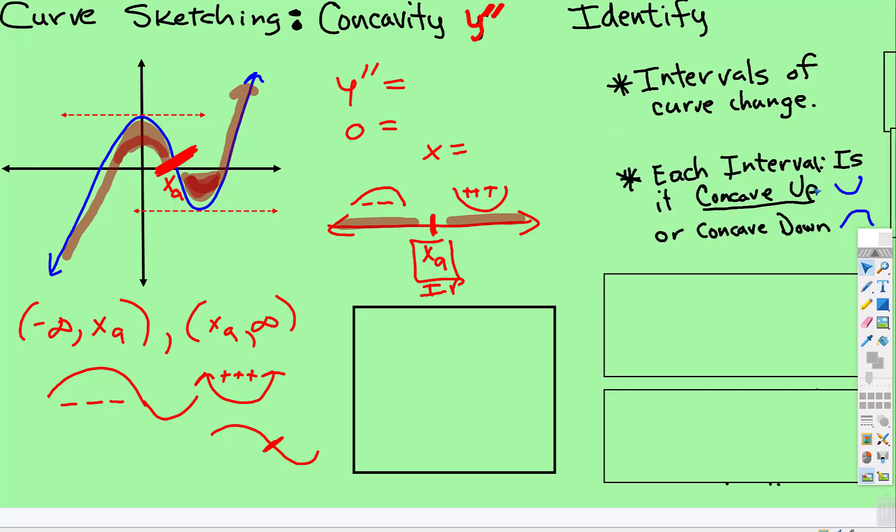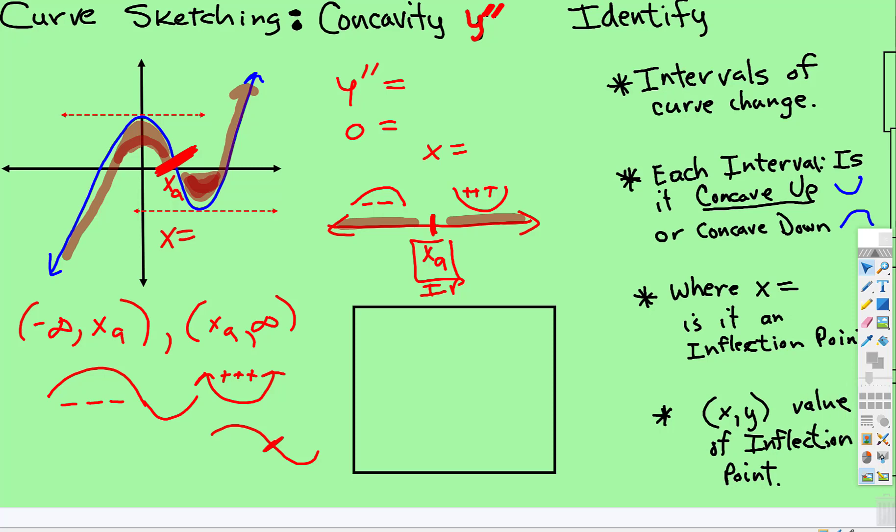So you identify whether the intervals are concave up or concave down, and at what point, what is that x value where there's a possible inflection point, and then you plug that x value into the original function, not to the second derivative, but into the original function to get the y value of that inflection point.